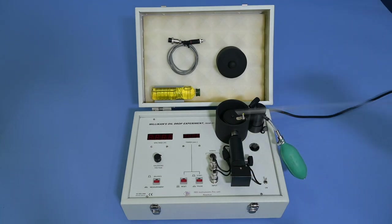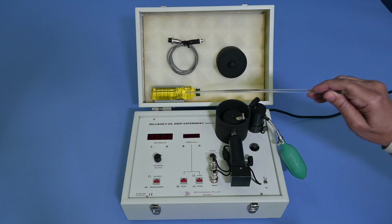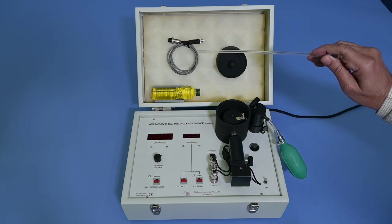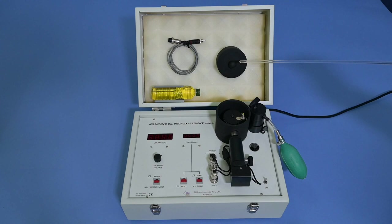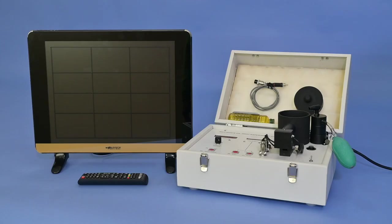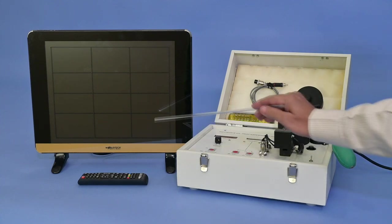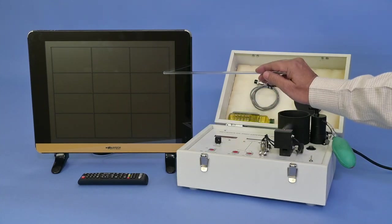Oil bottle, video output cable, oil fog inlet with cover plate, a LCD monitor with remote, graduated with horizontal lines, which helps in measuring the distance and time of drop movement. At the time of experiment, we measure the distance between second and fourth line.